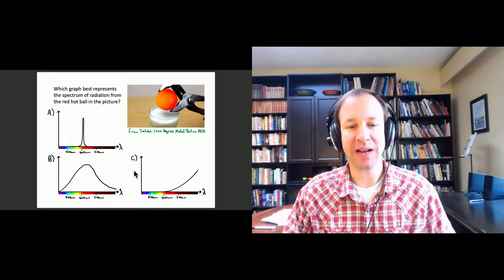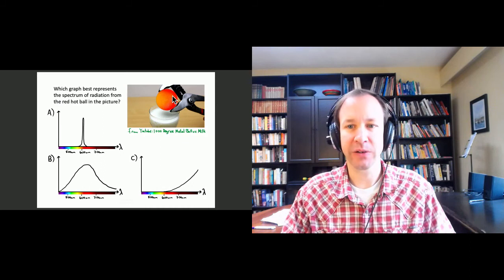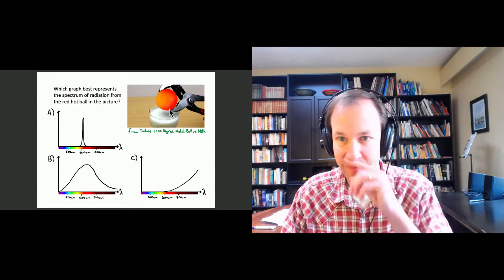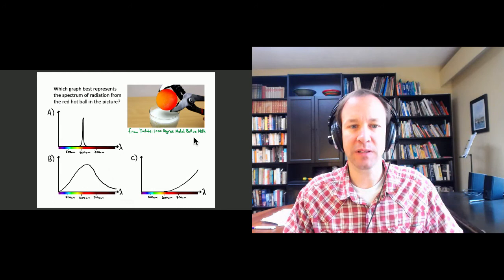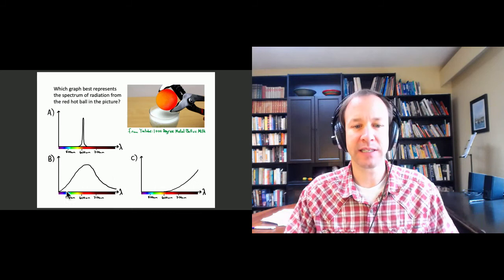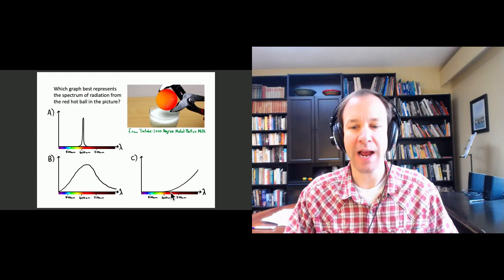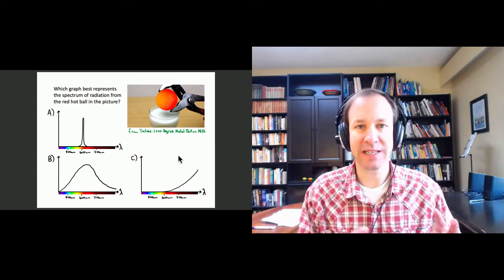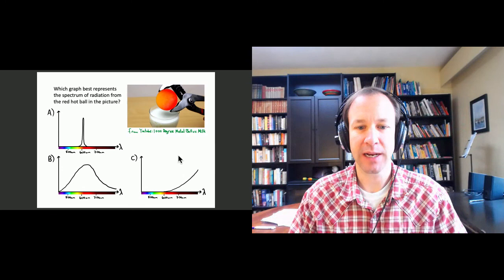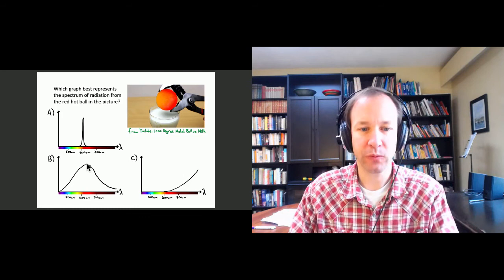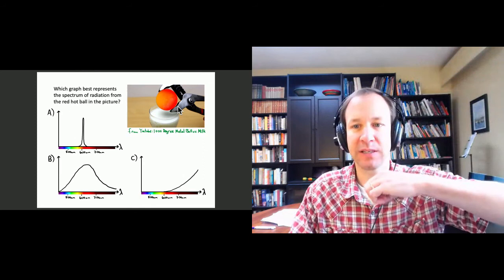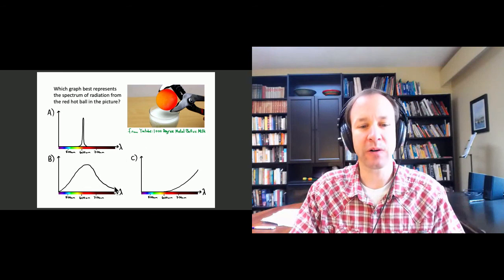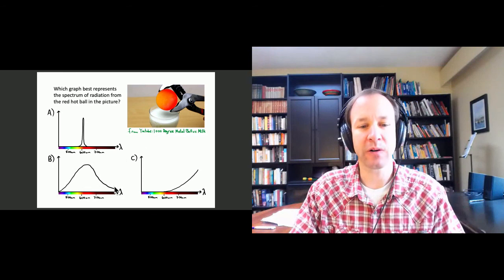Next time we'll understand specifically what these spectrum graphs look like for hot objects. We have a real image of a glowing metal ball at around 1000°C — it looks orange, but is it mostly visible light or mostly infrared with just a little visible? We'll run a simulation to see what the spectrum looks like for different temperatures, then quantify the peak wavelength (where the most radiation is emitted, which depends on temperature) and the total radiated power.